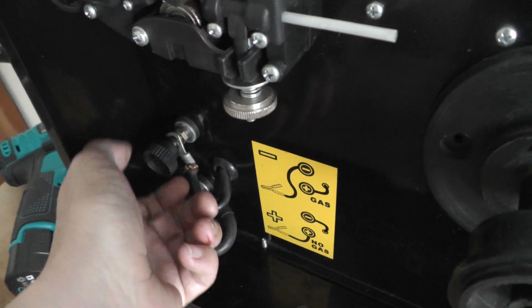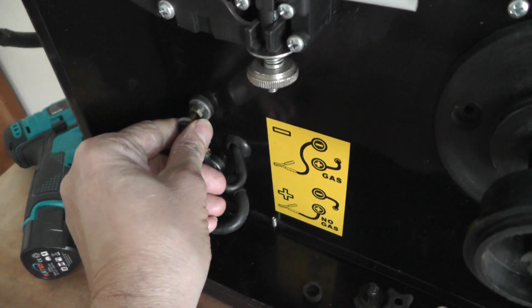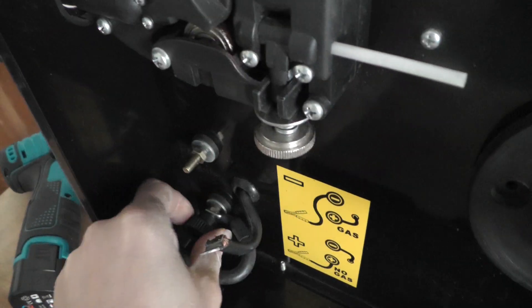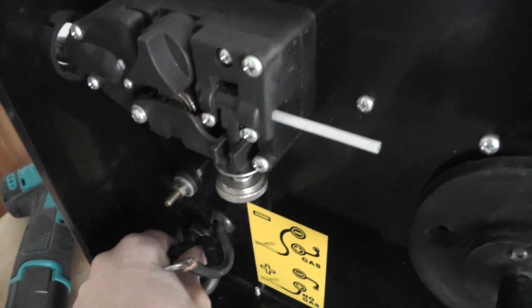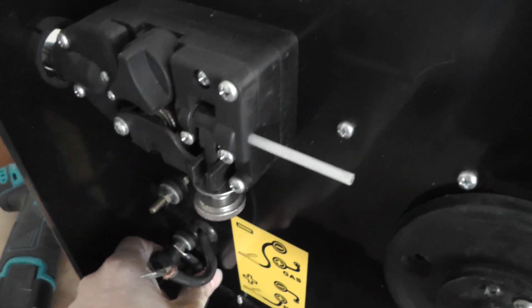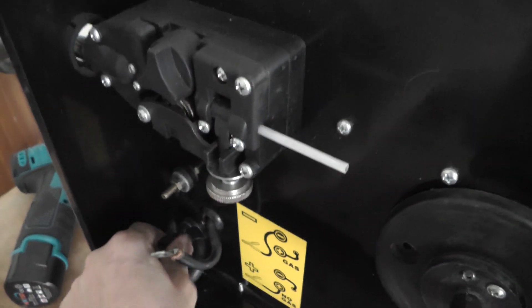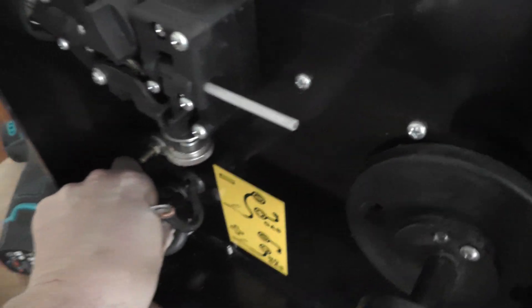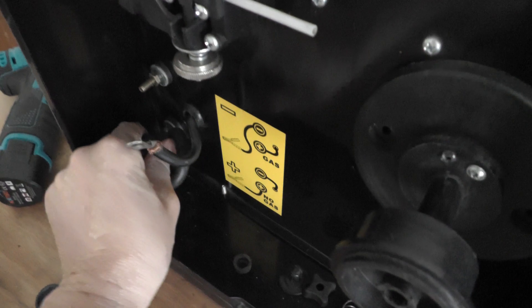Apparently, if you don't do this, the polarity is reversed on your lead. I think it just affects the way the flux melts in the wire and it doesn't do a very good weld. Well, I don't know. I've never tried it. That's just what I've read.